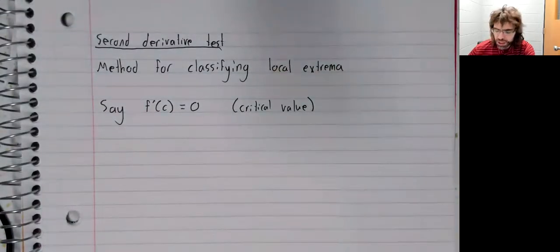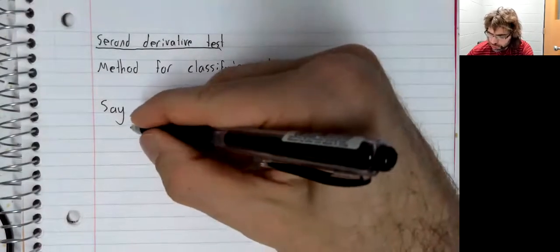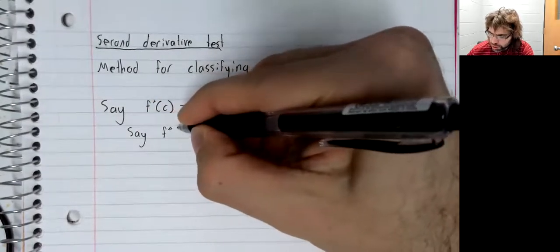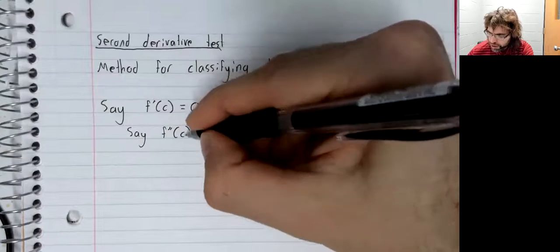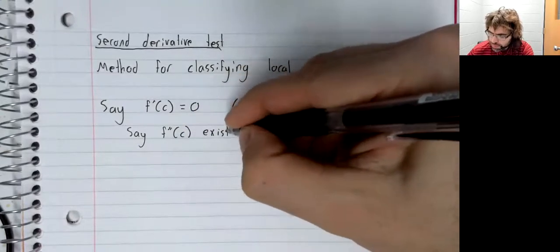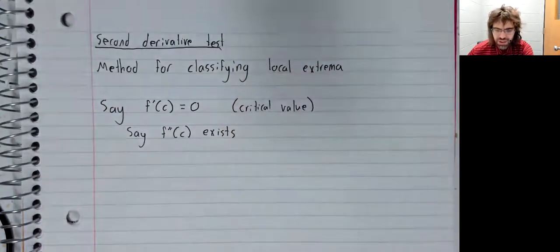So say we have a critical value where f'(x) = 0, and say further that the second derivative exists.